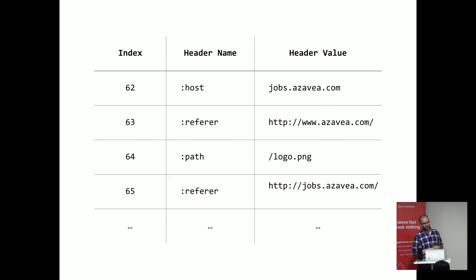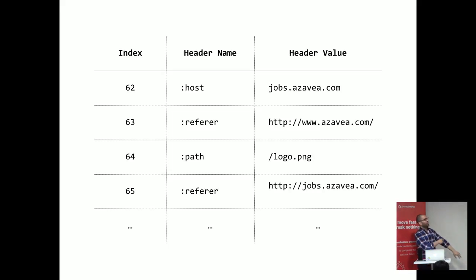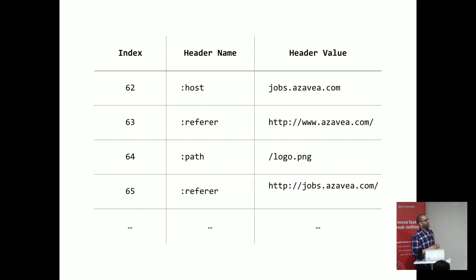This reduces a lot of bandwidth. I said there were 61 entries in the static table. From what I've seen in Nginx debugging output, there are different sizes for this dynamic table that you can tune, which gets populated as your connection gets reused. It would just be passing integers around instead of passing around all this information.